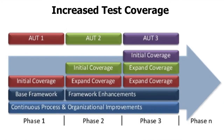For any testing assignment, you start with a certain level of coverage via manual execution. You then introduce a basic automation framework, and through continuous improvement and more skilled testers, your coverage slowly grows — moving from the red zone to the green zone. In different phases — phase one, phase two, phase three — your coverage expands and the framework is enhanced, resulting in increased overall coverage.